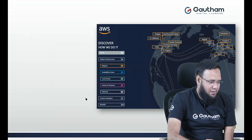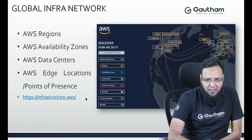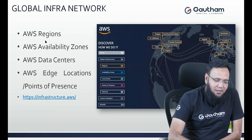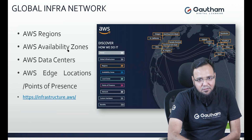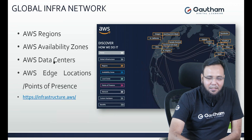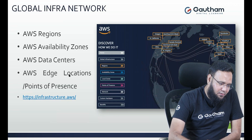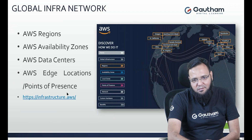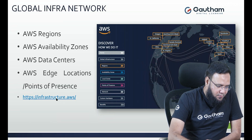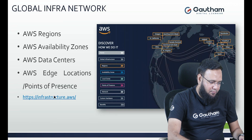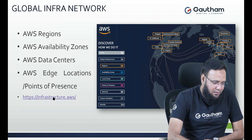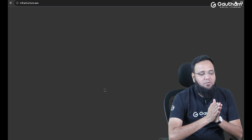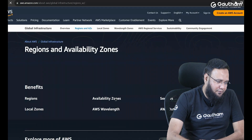Their global infrastructure is divided into generally three things: first is AWS regions, regions are divided into availability zones, and availability zones are divided into data centers. They also have something called edge locations. If you want to see their current infrastructure, you can simply go to https://infrastructure.aws. That location is going to take you to their global infrastructure and what is available.